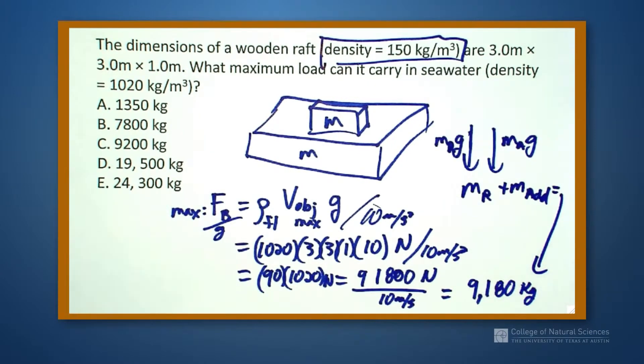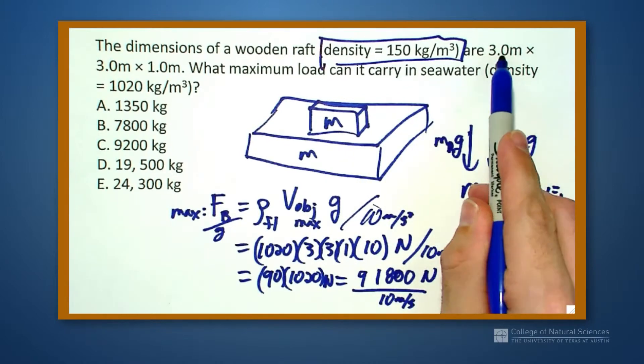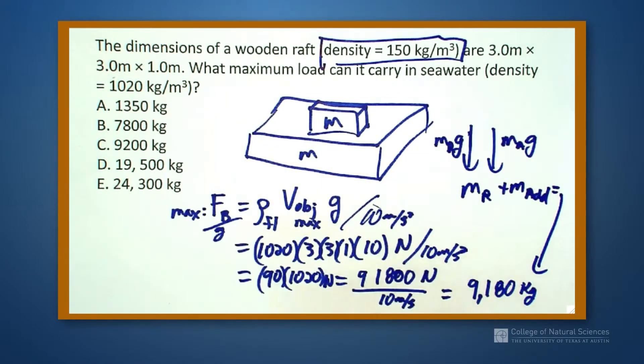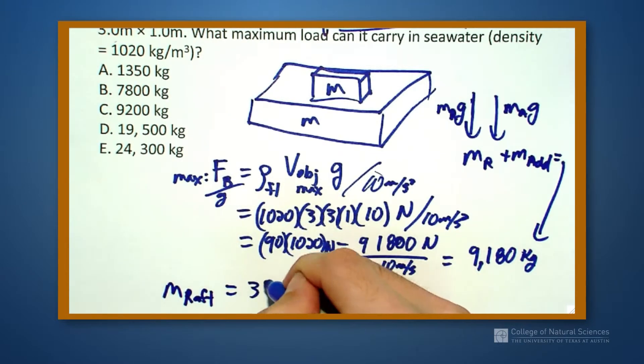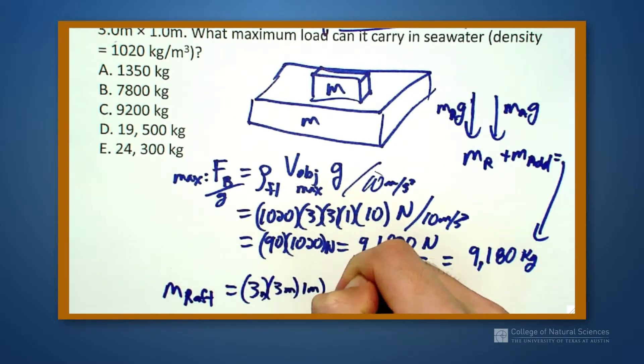So I need to know what the mass of the raft is. Well, the mass of the raft is 3 times 3, so the mass of the raft is equal to 3 meters times 3 meters times 1 meter times the density of the object.